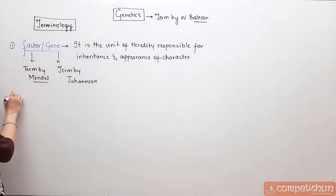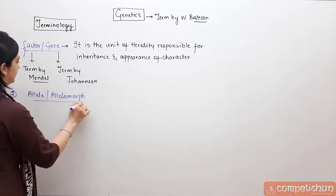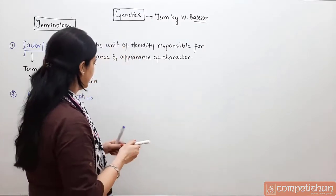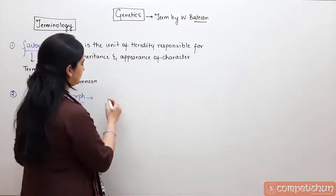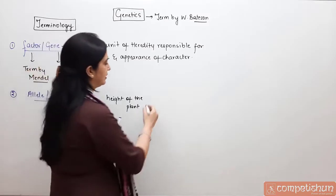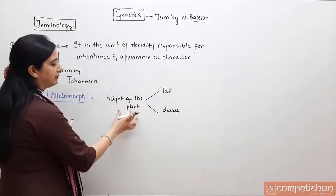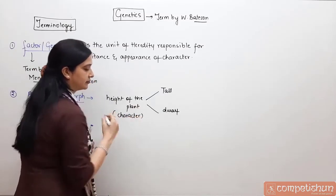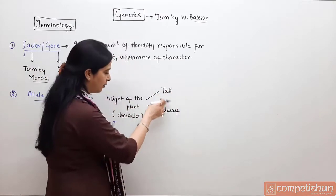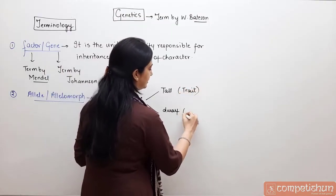The second term is allele, also called allelomorph. There are two alternative forms of a gene. Suppose there is a particular character of a plant — height of the plant. Height mein ya to plant tall hoga ya dwarf hoga. Height of the plant is the character, and tall and dwarfness are the traits — these are the two contrasting forms of this character, known as traits.